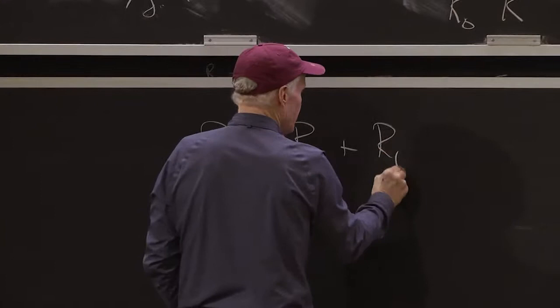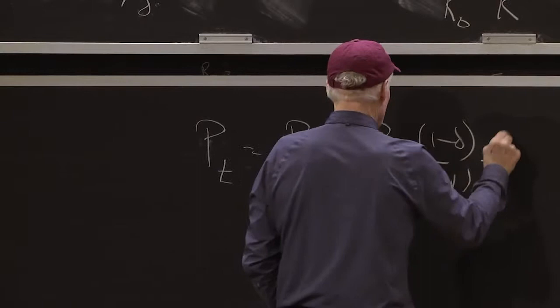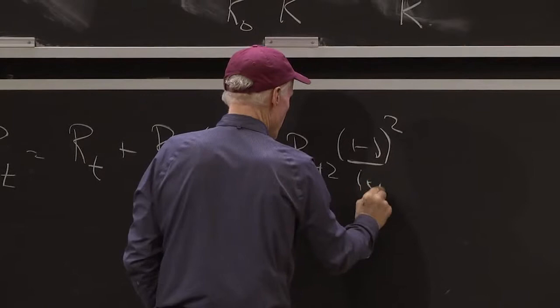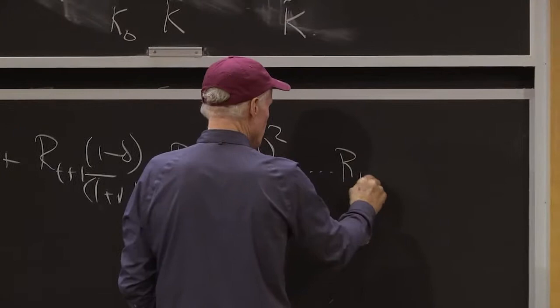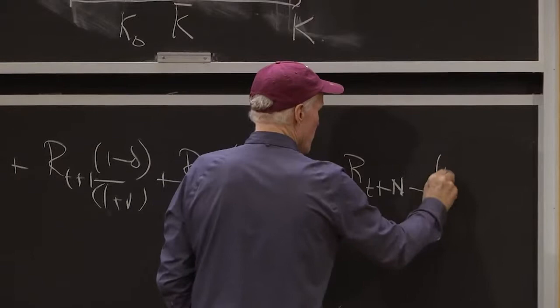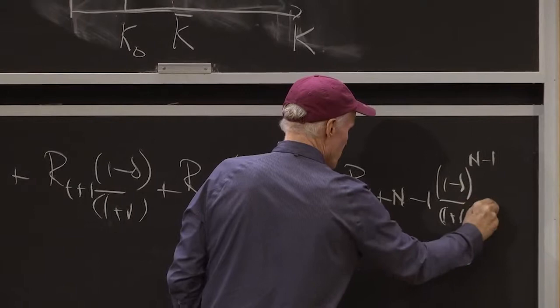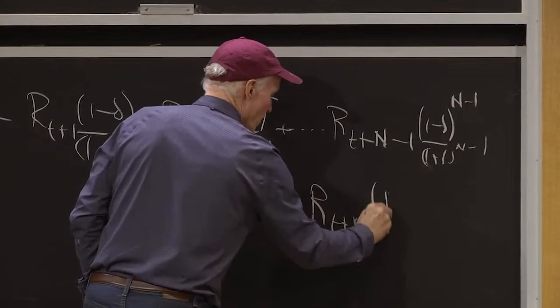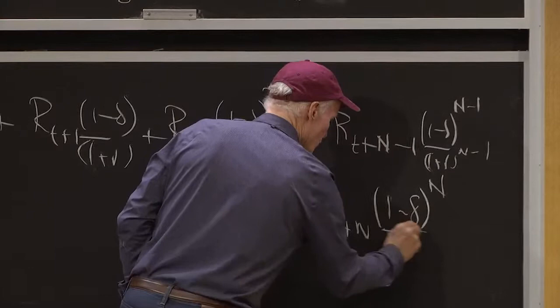is equal to the rental rate at date T plus the rental rate at the next period, 1 minus delta over 1 plus R, plus RT plus 2, 1 minus delta squared over 1 plus R, plus dot dot dot, RT plus N minus 1 times 1 minus delta to the N minus 1 over 1 plus R to the N minus 1, plus PT plus N, 1 minus delta to the N over 1 plus R to the N.